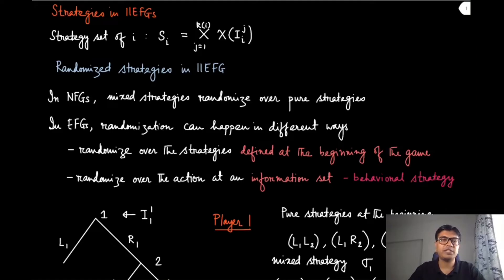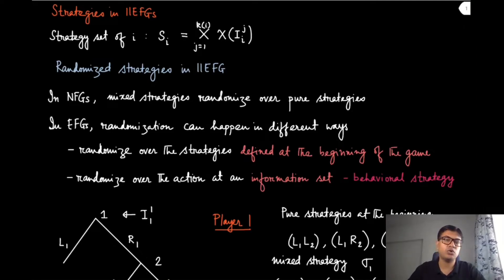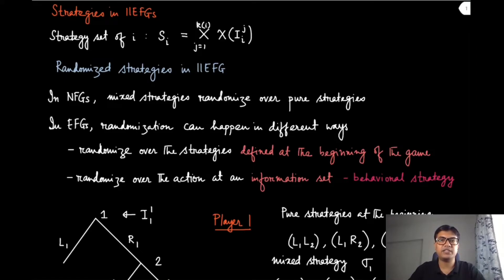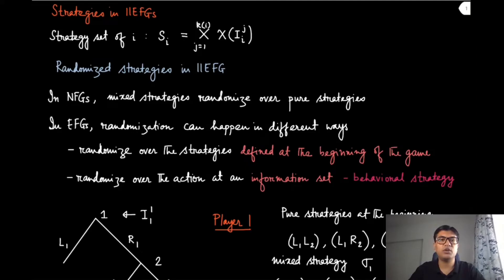So why didn't we talk about this randomization in the case of perfect information extensive form games? Because we already knew it is possible to find a pure strategy equilibrium — the subgame perfect Nash equilibrium — which also happens to be the pure strategy Nash equilibrium. A perfect information EFG is one such game where a pure strategy Nash equilibrium is guaranteed to exist, so we never bothered with randomized strategies.